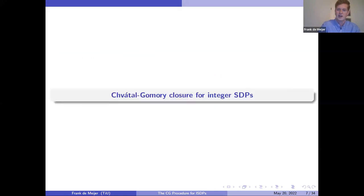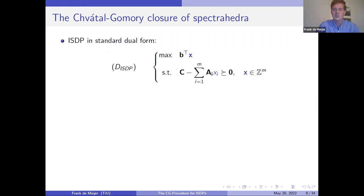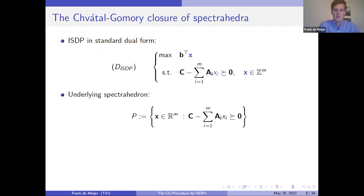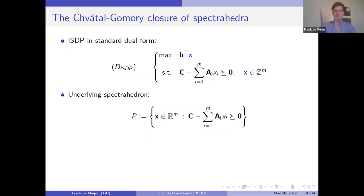Let's now apply this to our integer SDP. Recall that we are looking at the dual formulation. An important set we obtain by relaxing the integrality assumption is the set P, which is a spectrahedron because it is defined by linear matrix inequalities. We would like to apply the Chvátal-Gomory procedure on this set P. One problem is that the procedure as presented involves a fairly implicit definition — taking some half-space containing the set and applying a rounding strategy. It's not really clear how to obtain those cuts that contain the set, so our first research question was: can we find a more explicit definition of those cuts using the data matrices C and A_i?